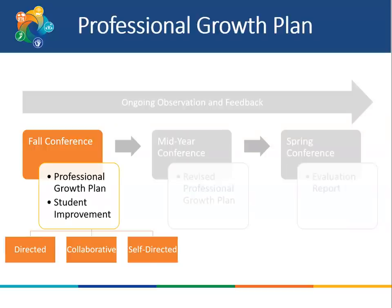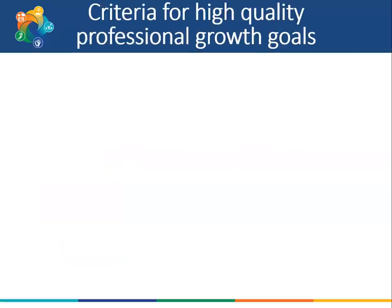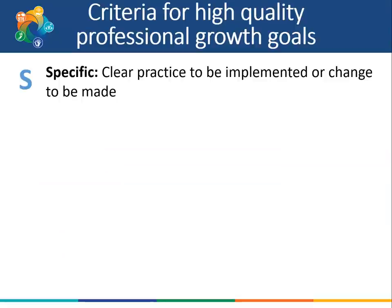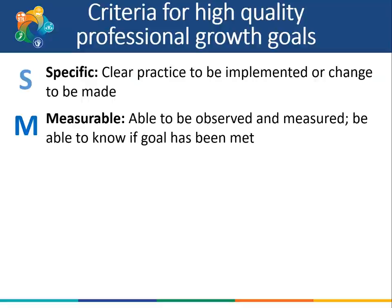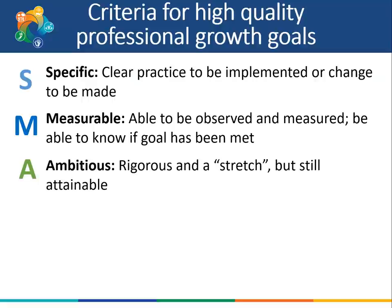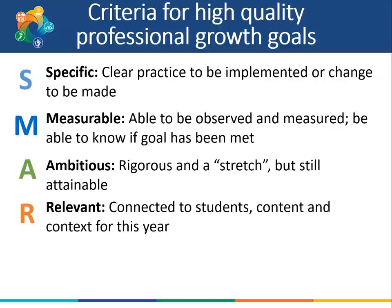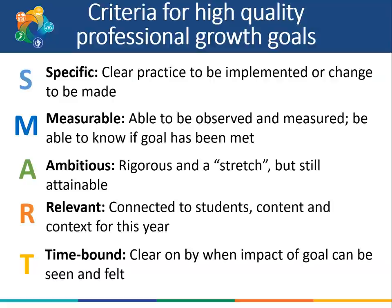Let's return to the Professional Growth Plan and specifically the process for creating High Quality Professional Growth Goals. There are several criteria for High Quality Professional Growth Goals. First, strong goals are specific — they include a clear practice the teacher will implement or a clear change to be made. High quality goals are measurable — able to be observed and measured — and both the administrator and teacher should be able to know if the goal has been met. High quality goals are ambitious: rigorous and a stretch for the teacher, but still attainable. Goals should also be relevant — connected to the students, the content, and the context in which the teacher is teaching that year. Finally, high quality goals are time-bound, with a clear indication of by when the impact of the goal can be seen and felt in the classroom.